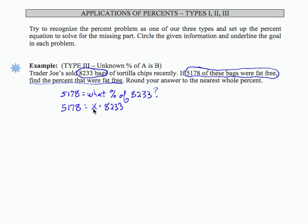To solve for the unknown x, I'm going to divide both sides by 8,233. That's going to cancel the 8,233 on the right and leave me with this ratio or this fraction for x.